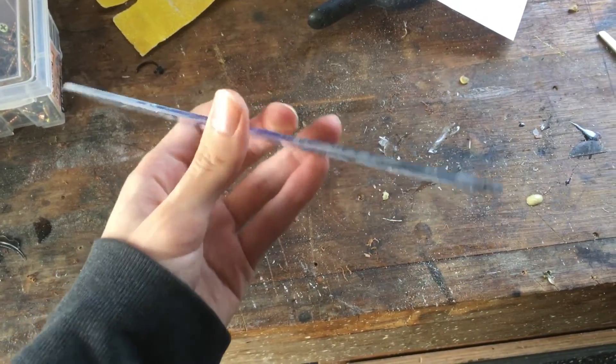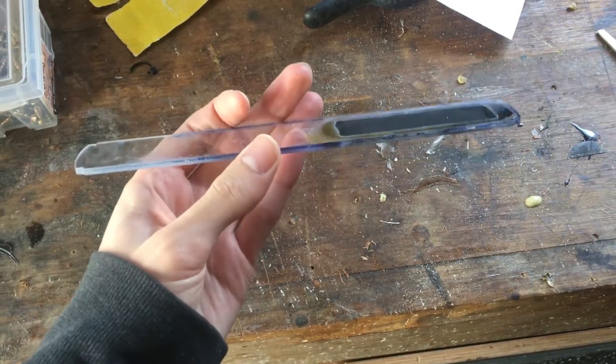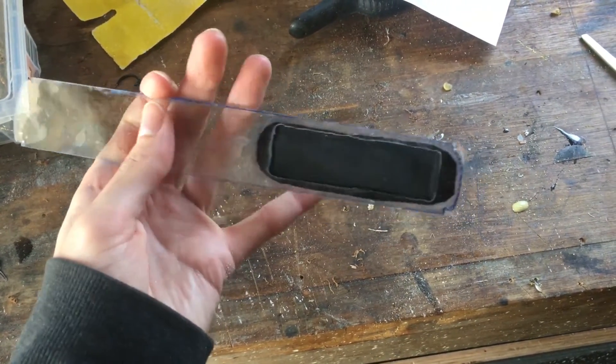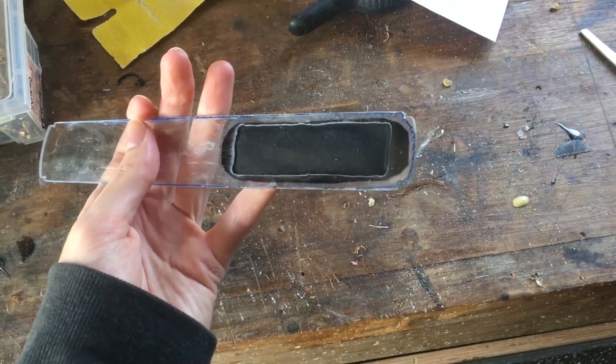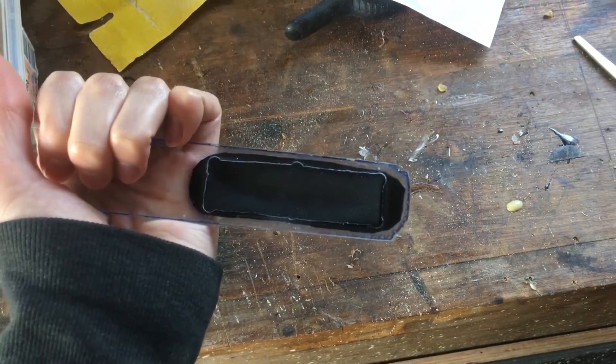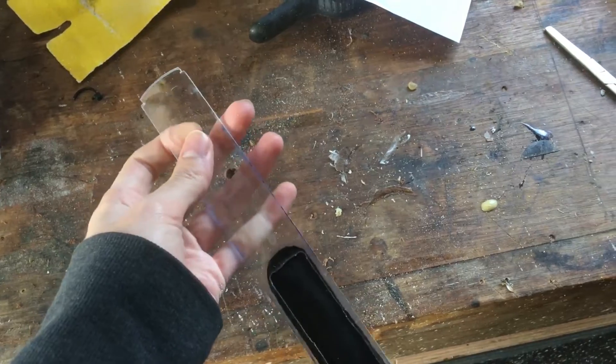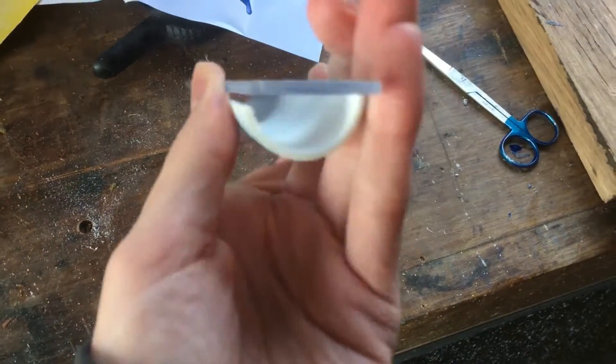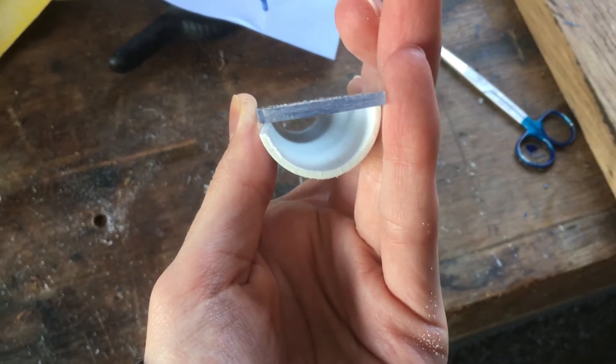Alright, that's the first step done. I've got those two pieces of acrylic sealed together with the piece of microfiber cloth in between them as our separator. The next step is to put on the next parts of the cell in order to make the two chambers for the hydrogen and oxygen.